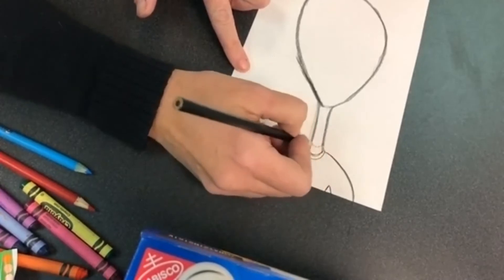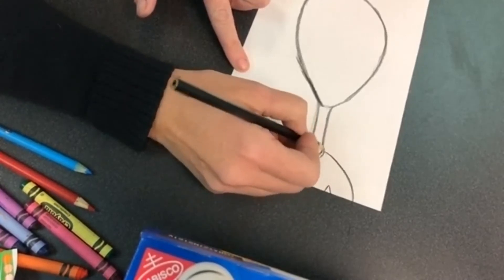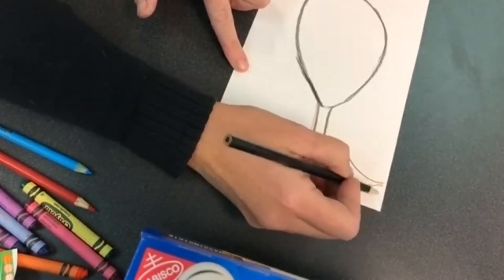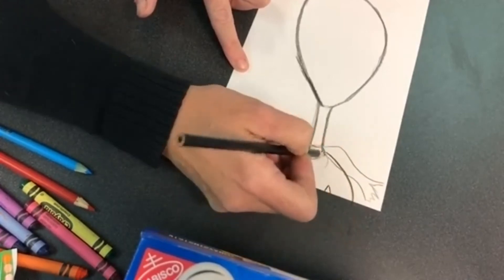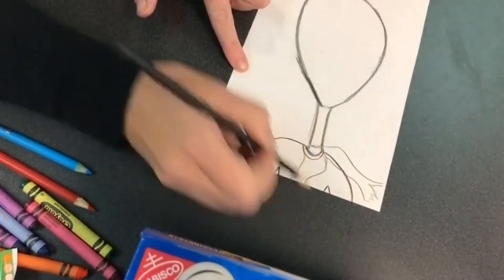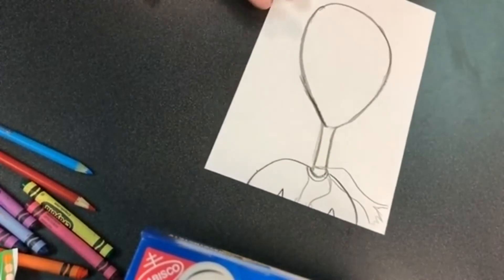And then you can add any details for clothing that you want here. You may add something. I have on one of my examples a scarf. So you may add some sort of scarf. You can add whatever details you want for clothing.